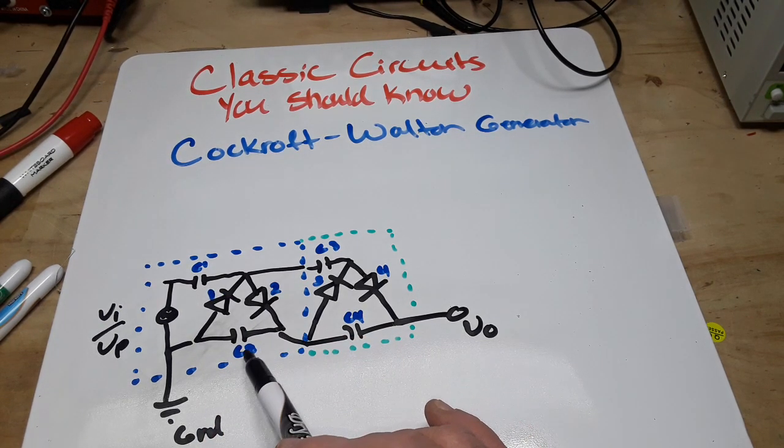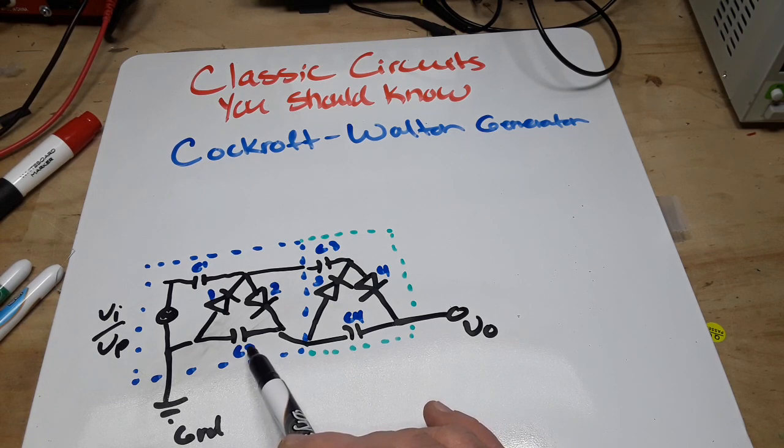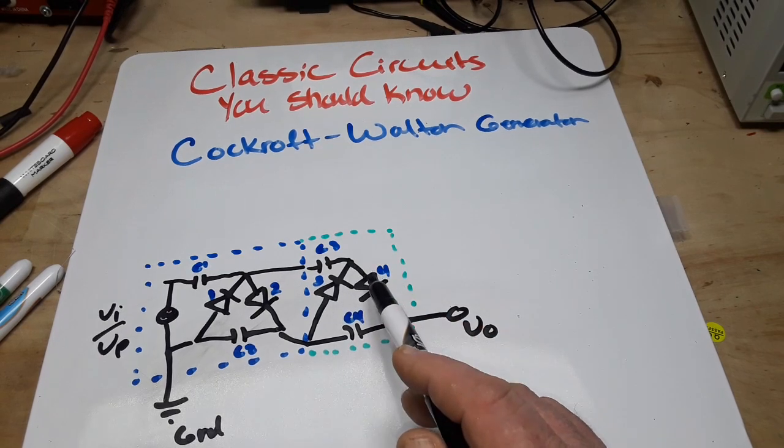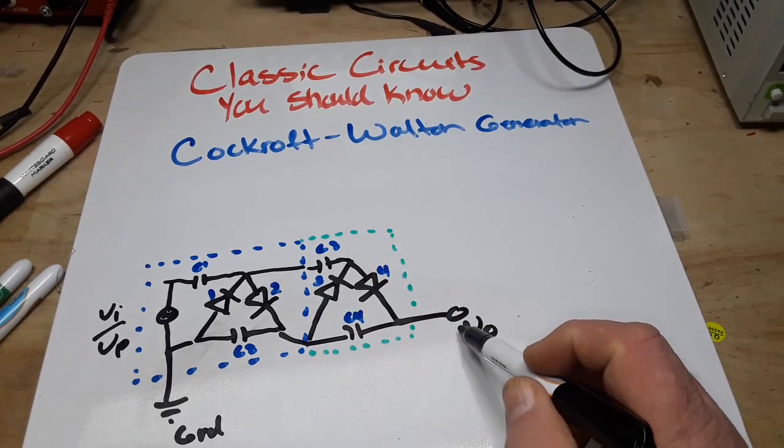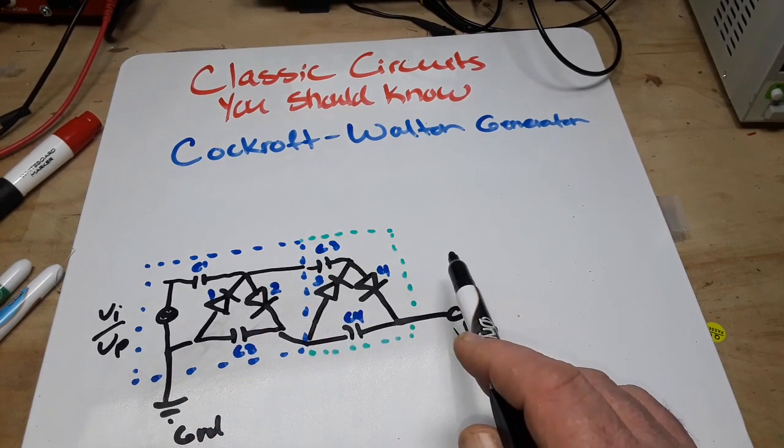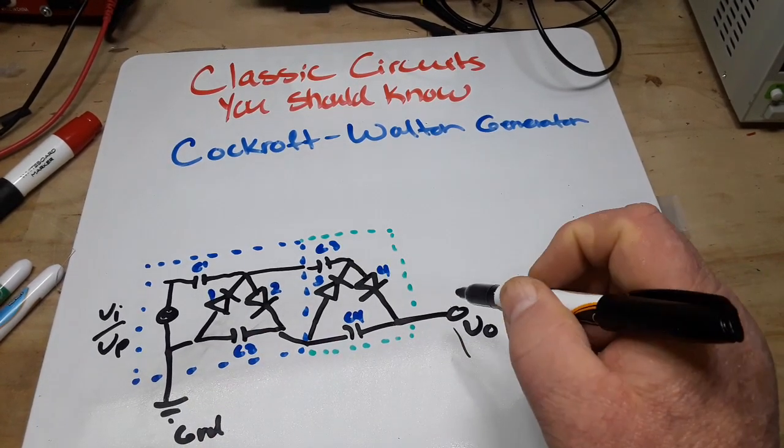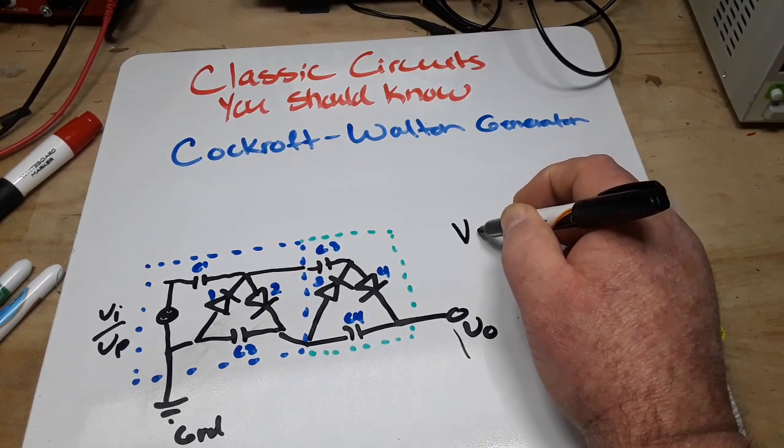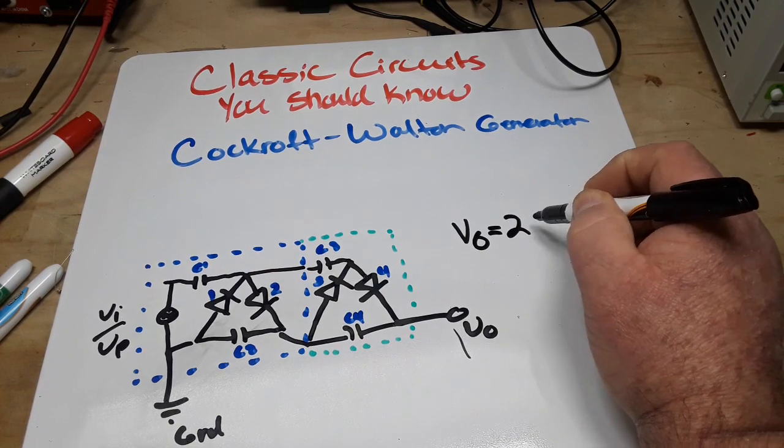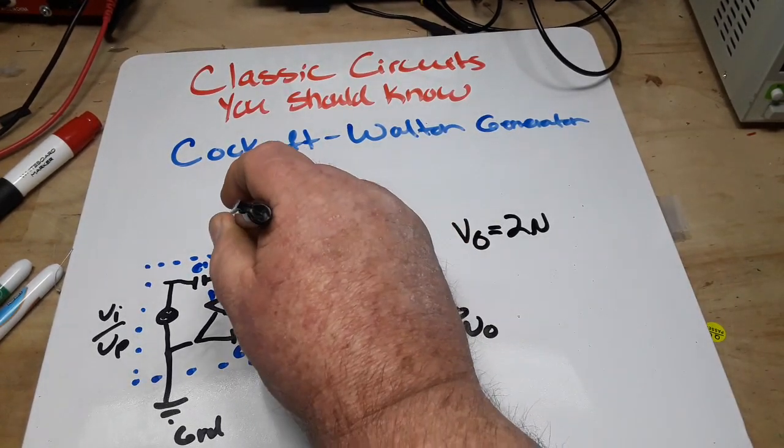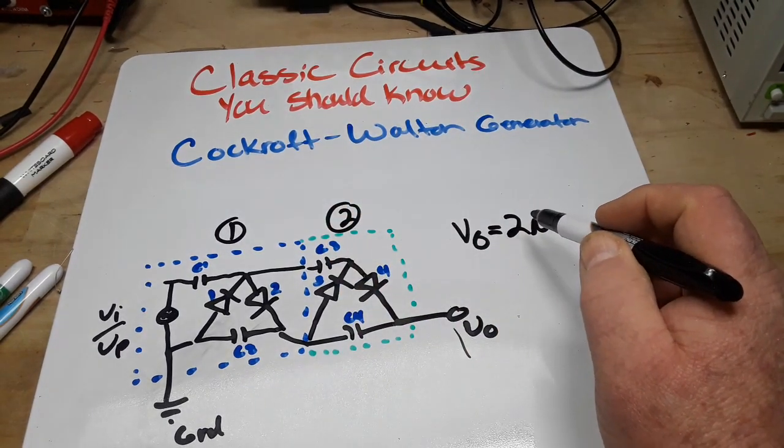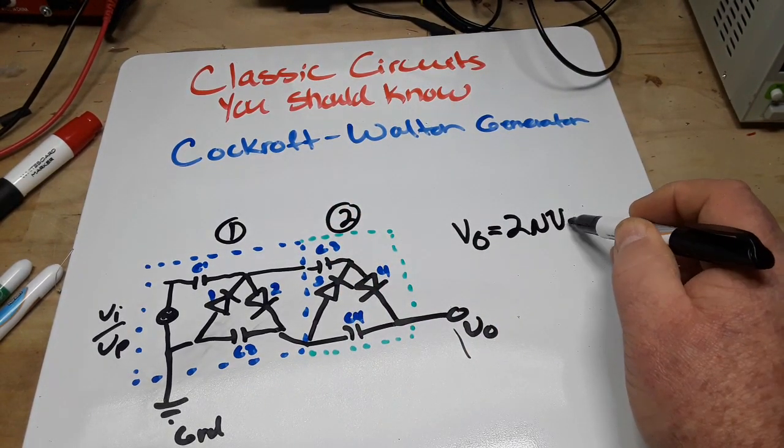Charging capacitor C2 to a voltage of 2VP. And then that happens again here and here. And when we take this we simply end up adding up all of our 2VPs and we can figure this out with the formula: Vout equals 2N, which is the number of stages, in this case we have two stages, 2N VP, which is also equal to N VPP.